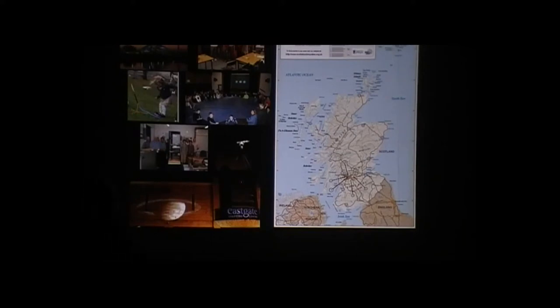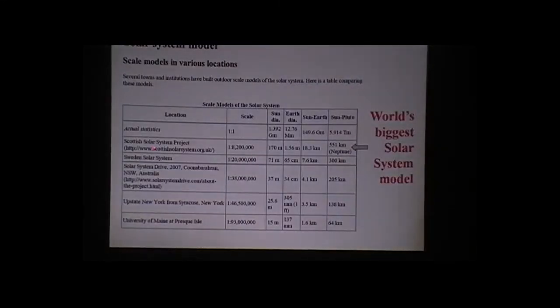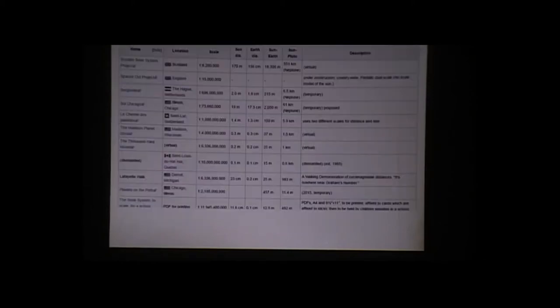We did get ourselves onto Wikipedia. There's a page for solar system scale models. Our scale was closer in size to the real solar system than any other models. But the downside was it's not a permanent model. If you go to Wikipedia now, we've been bumped down to another table for temporary, virtual or dual scale models. But we are still top of that. And Scotland's not part of the UK on that page.